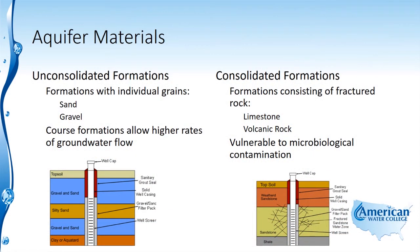The type of formation underground will determine the way in which a well is constructed. In unconsolidated formations — which have individual grains within them, for example sand and gravel — you're going to construct a well differently than if you're drilling into a consolidated formation.